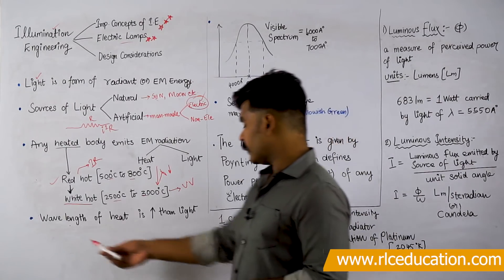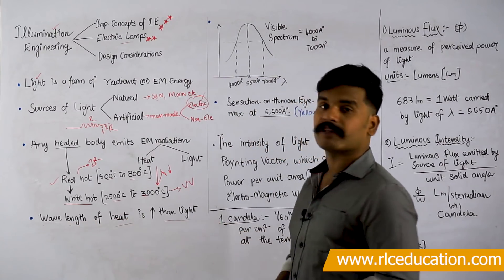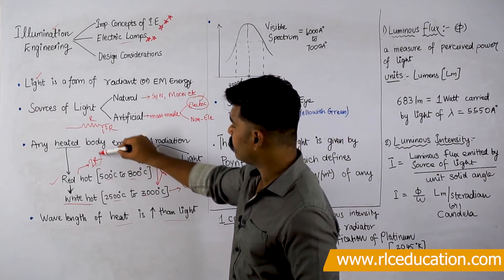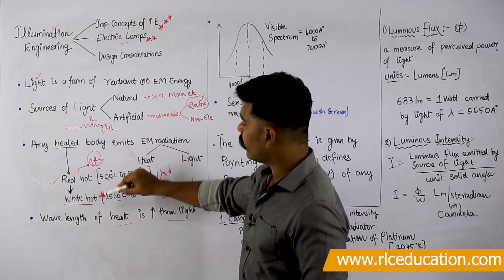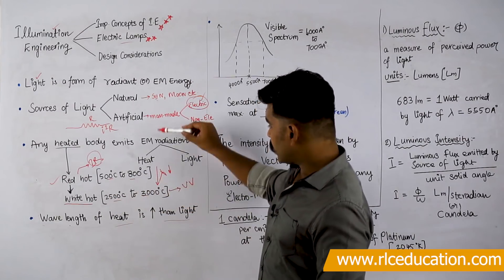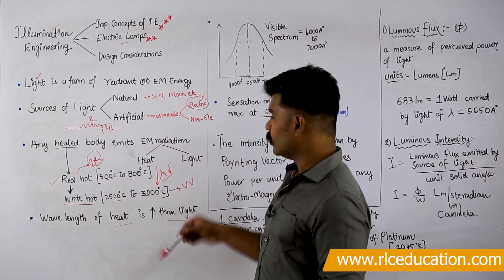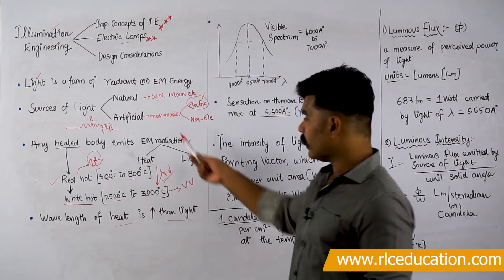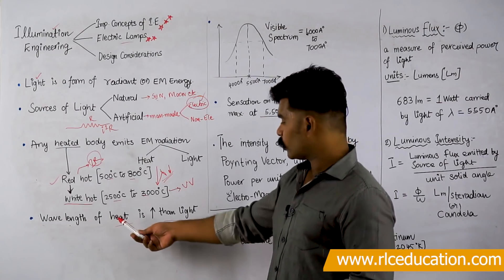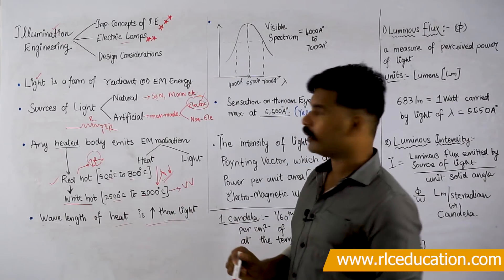The wavelength of heat is more than the wavelength of light. Where heat is maximum is at infrared; after infrared, light starts emitting from the body. As you heat the body, the wavelength keeps decreasing. So both heat and light are electromagnetic radiation — the only difference is their wavelength. Heat has a greater wavelength than light — a very important relation.